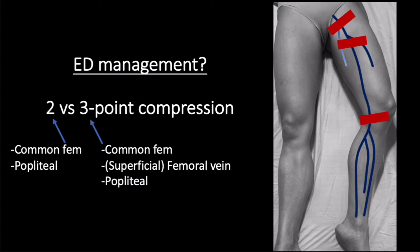There is also discussion concerning two- versus three-point compression. Two-point compression simply means looking at the common femoral vein and popliteal region, with three-point adding the femoral vein, since this was the most common area in which DVTs were missed when utilizing the two-point method. I am personally a proponent of three-point compression, since adding this area increases sensitivity and test performance. I am also a proponent of using the term 'region' rather than 'point,' because we are really evaluating more than just one specific point. Evaluating the entire area adds only 20 seconds in each location, yet results in a more thorough examination. It has been shown that emergency physicians can do this well with minimal training, with multiple studies showing sensitivities in the mid-90s.